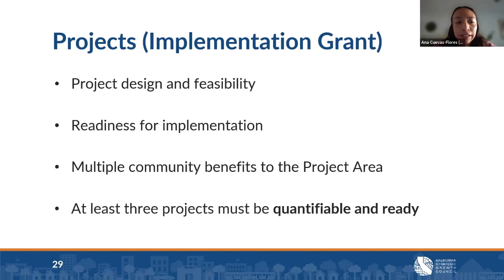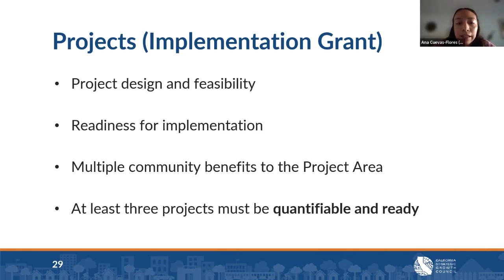For the implementation grant, proposals must include multiple integrated and coordinated projects across the project area. Scoring looks at whether project designs are ready and feasible for implementation — these must be shovel-ready projects, including site control, permits, and CEQA compliance depending on project type. Projects must bring multiple community benefits and impacts to the project area. At least three projects for the implementation grant must be quantifiable and ready, as will be more clearly defined in the round five guidelines.